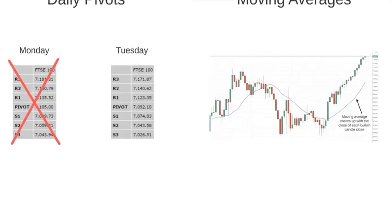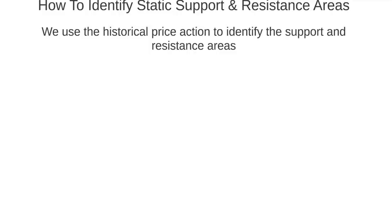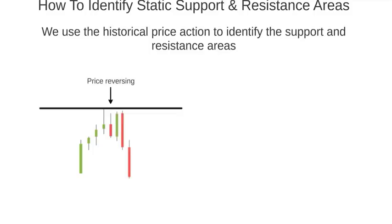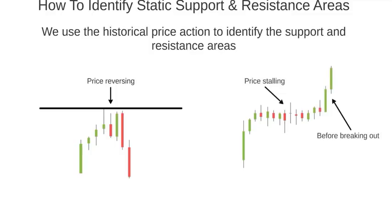We can identify static price areas by looking at the historical price action on our charts. We are looking for price areas where price has been heading in a particular direction and then stopped and reversed. Equally, we can spot an area if price has paused for a significant amount of time before breaking through and continuing in its original direction. Support and resistance areas aren't always as clean in reality as in illustrations, so let's jump to the charts for real-life examples.